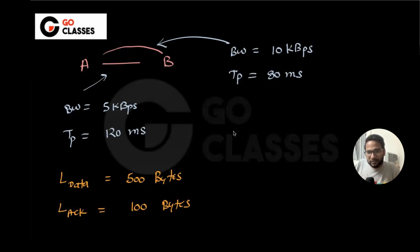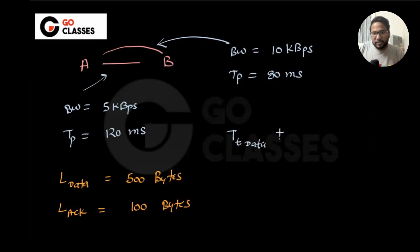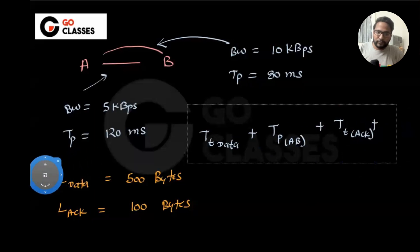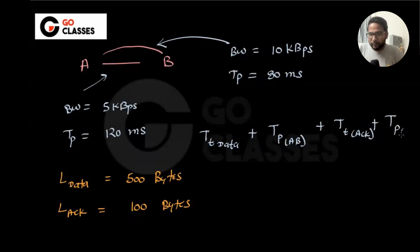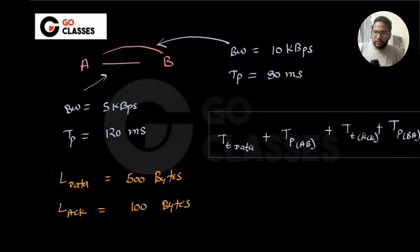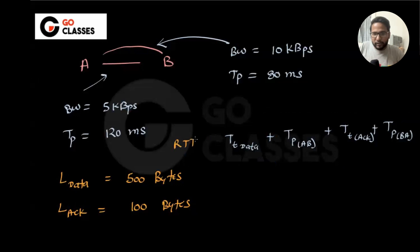From A to B using stop-and-wait, first the data gets transmitted — transmission time of data — then it propagates from A to B. Then B transmits the ACK, and then the ACK propagates from B to A. This is the total time, which we call RTT.